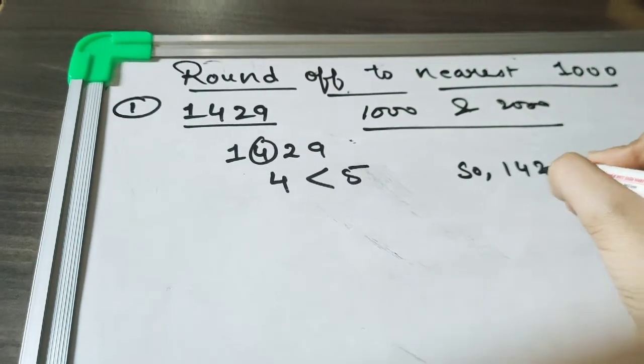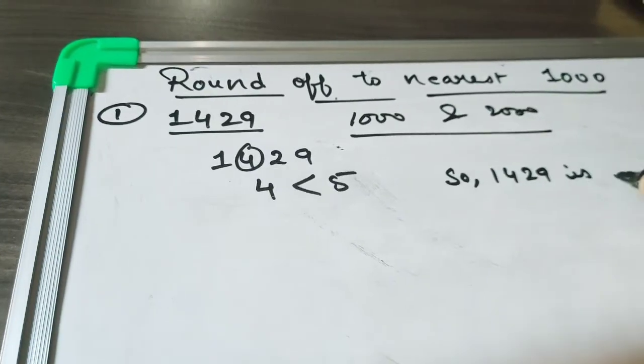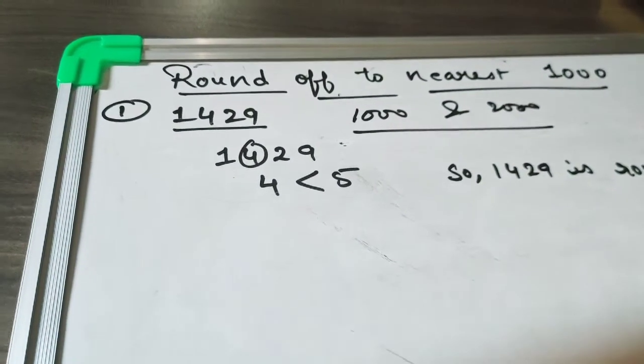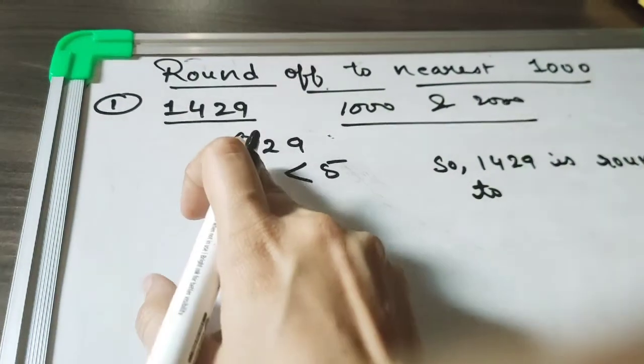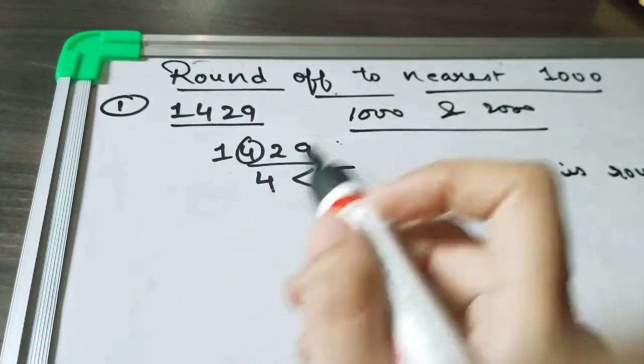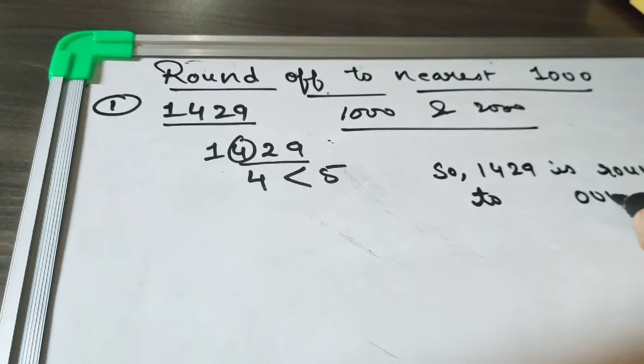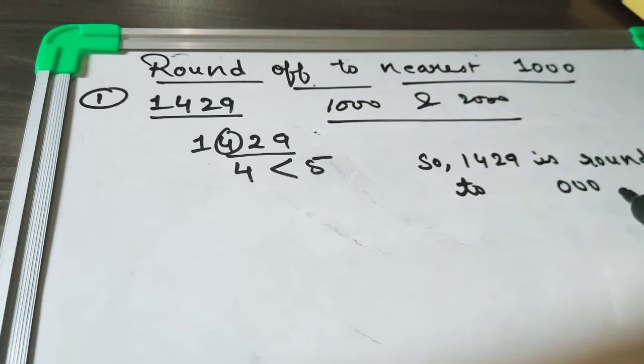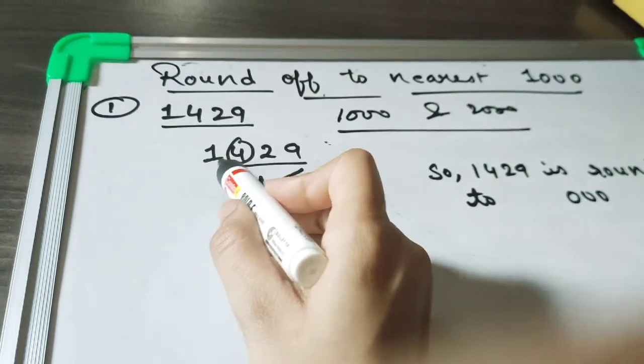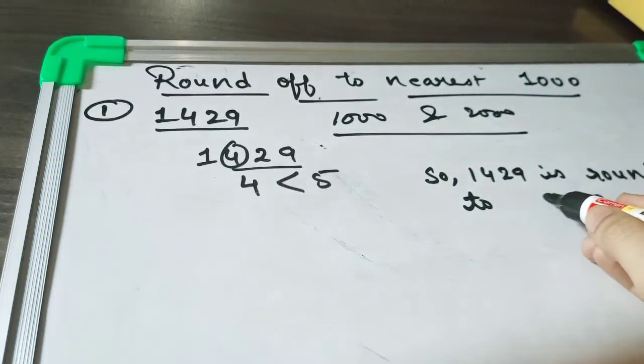So 1429 is rounded up to which number? It will be—remember that these three numbers will be zero. As I've told you in the previous video, there are three zeros. So we will put three zeros because we are rounding off, but there will be no change in this number because it is not more than 5. So we got the answer: 1000. Let's take one more example, that is 6528.